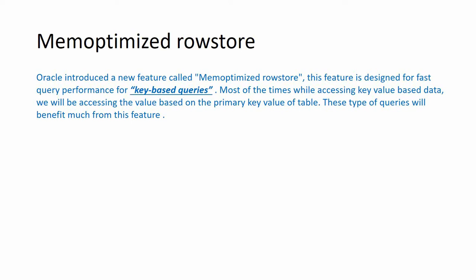For this, Oracle introduced a new memory pool where it caches the information about the key value. Thereby, whenever we are accessing the table, instead of going through the execution layer, Oracle directly takes the hashed value and directly retrieves the data from the data layer.